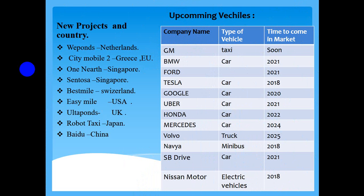New Projection Countries. There are lots of ongoing projects in the world. The most notable are: WEpod by Netherlands, CityMobile2 by Greece, Unmanned by Singapore, Sentosa by Singapore, BestMile by Switzerland, EasyMile by USA, Altafons by UK, RoboTaxi by Japan, Baidu by China, and others.